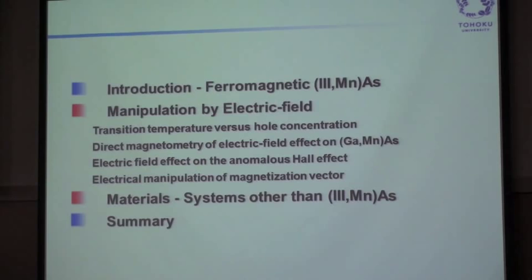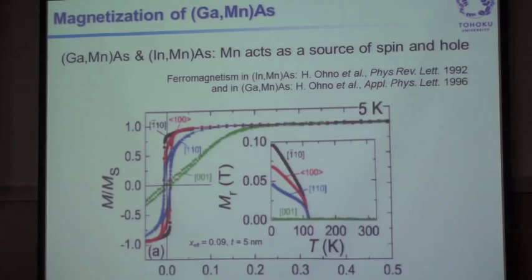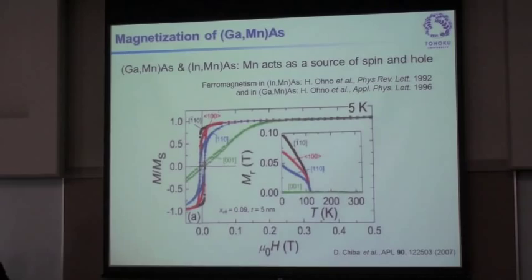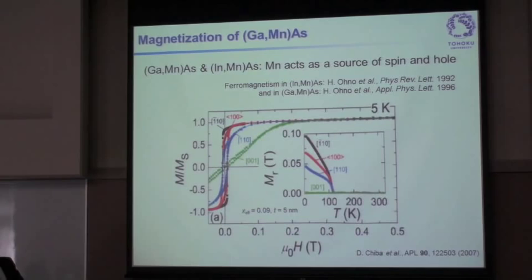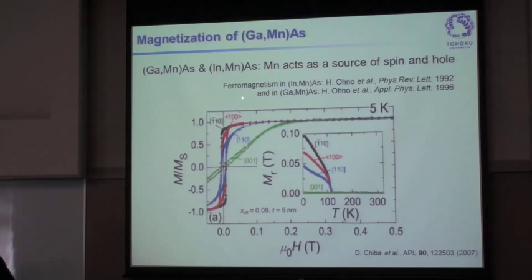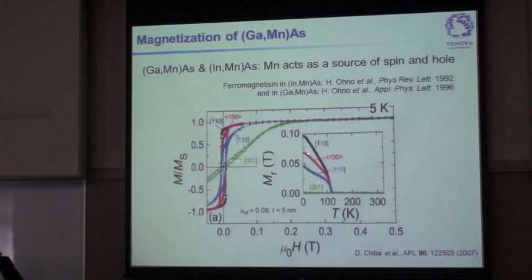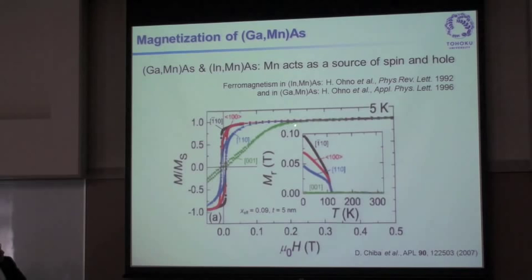Basically, we alloy manganese into gallium arsenide or indium arsenide. Indium arsenide and gallium arsenide are known as non-magnetic semiconductors used for high-speed transistors and lasers. We make them ferromagnetic — in this particular case, below 100 Kelvin, spontaneous magnetization appears. There are also magnetic anisotropies: crystal directions along which it is very difficult or very easy to align the magnetization. This crystalline anisotropy plays a role later in my talk.